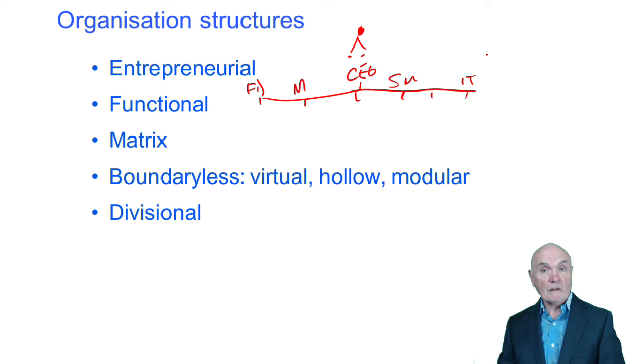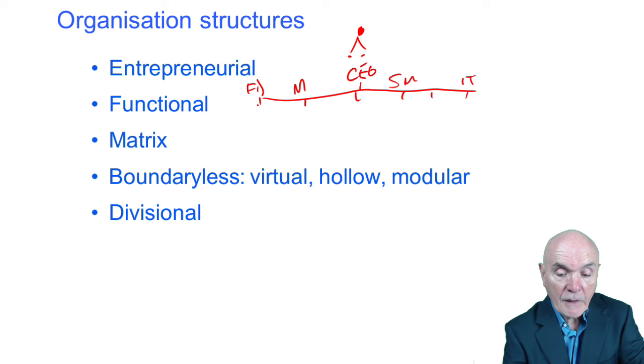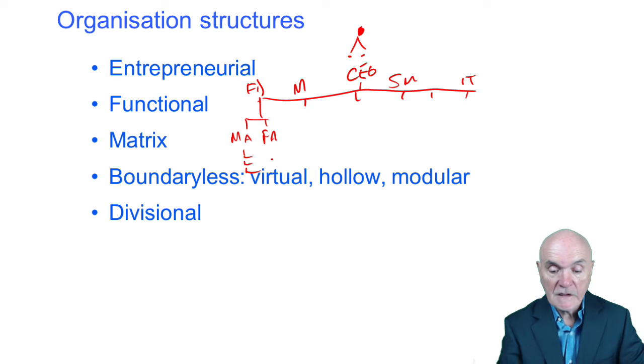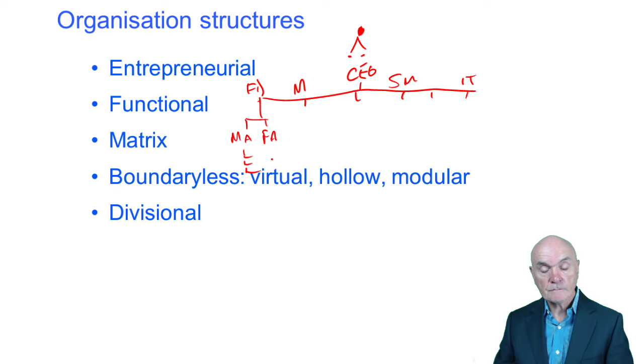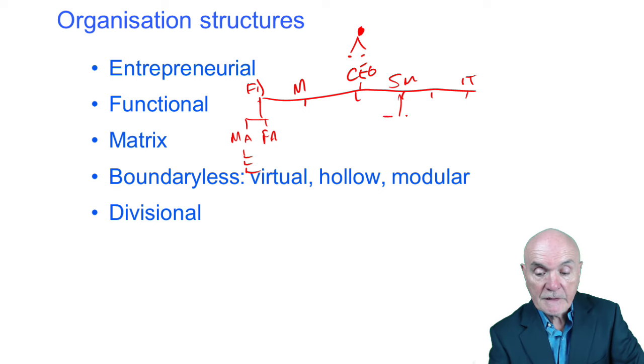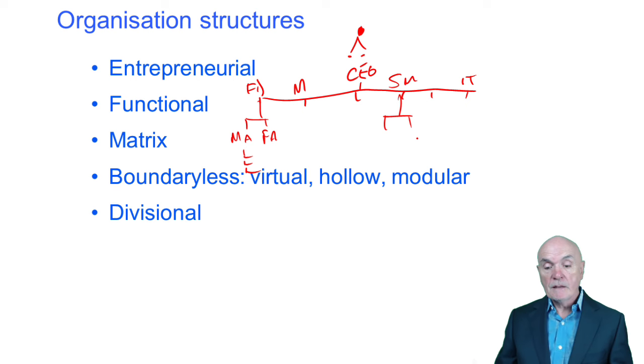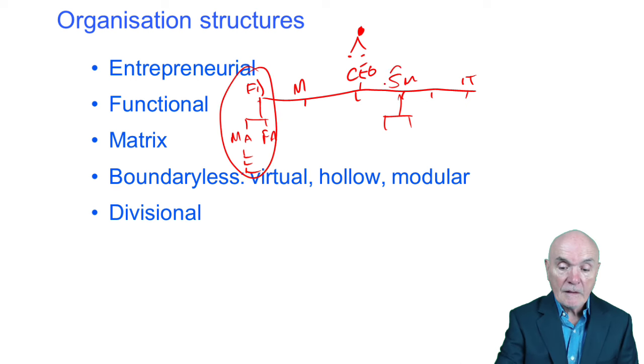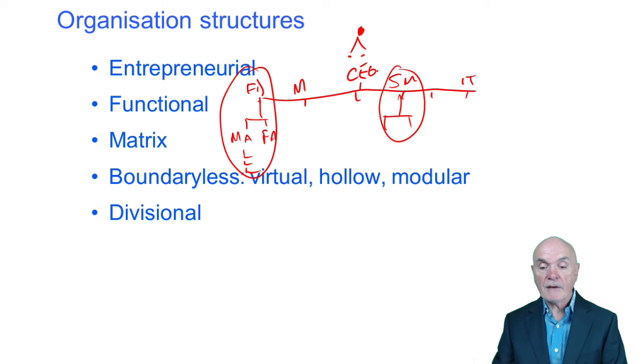And then under the finance director, maybe it splits into management accounting and financial accounting. And then kind of below that, you have, you know, chief accountant, assistant accountant, somebody in charge of the receivables, somebody in charge of the payables, and so on. In sales and marketing, maybe it's split in some way into marketing to major types of product, which they have and so on. But the essential thing is that you are grouping together people who carry out related or similar or indeed identical functions.